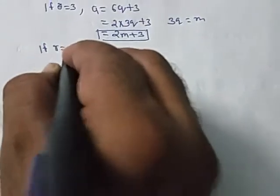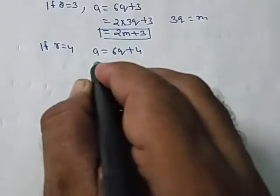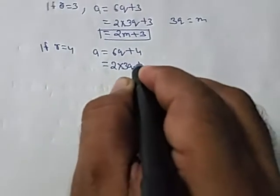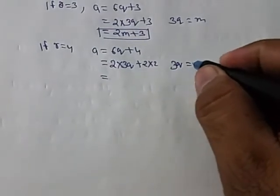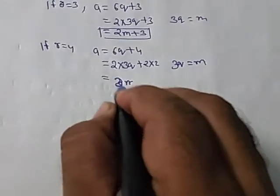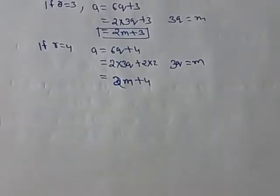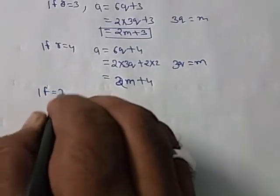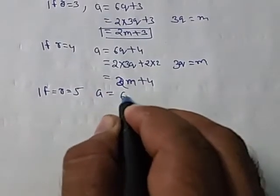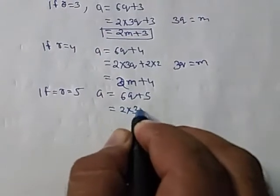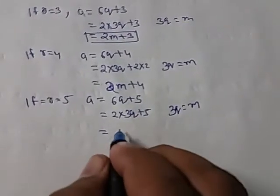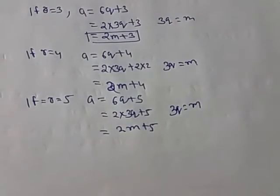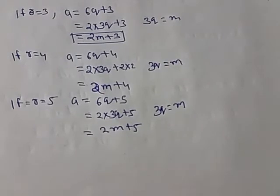If r equals 4, a equals 6q plus 4, which means 2 multiplied by 3q plus 2 into 2. Setting 3q equal to m gives 2m plus 4, and this equation is divisible by 2, so 6q plus 4 is even. If r equals 5, a equals 6q plus 5, giving 2m plus 5 where m equals 3q, and this equation is not divisible by 2.